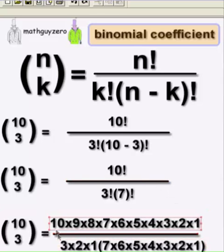And that's what that means, ten times nine all the way down to one, three times two times one. That's what factorial means, goes all the way down to one.